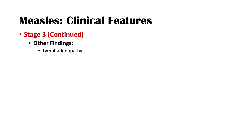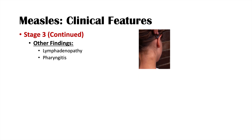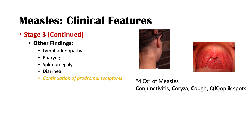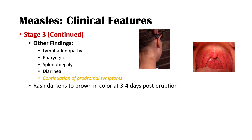Other things that happen in stage three include lymphadenopathy — swollen, tender lymph nodes — pharyngitis or a sore throat, splenomegaly or an enlarged spleen, and diarrhea. We can also see continuation of those prodromal symptoms: conjunctivitis, coryza, or cough. To remember, you can think of the four C's — coryza, conjunctivitis, cough, and Koplik spots. As the rash progresses, it darkens to a brown color about three to four days after it initially erupted, then fades in the same head-to-toe pattern and may desquamate — flake off.